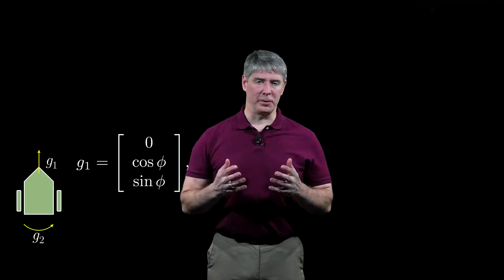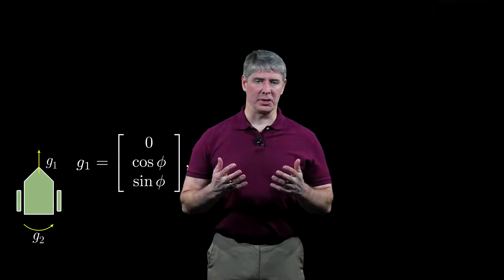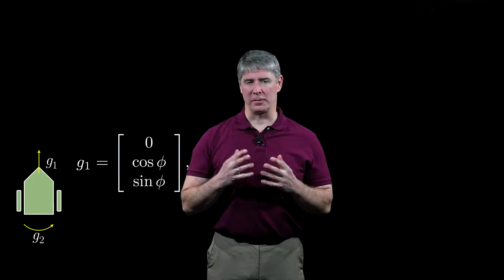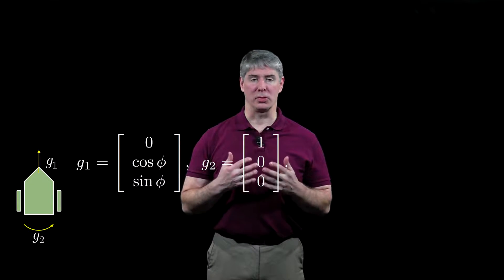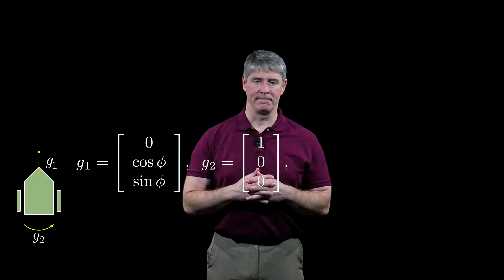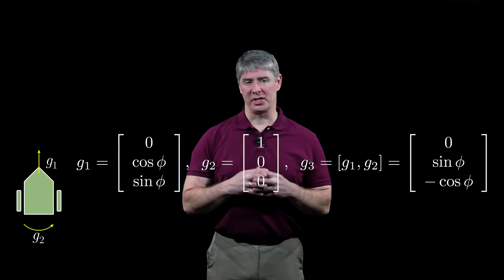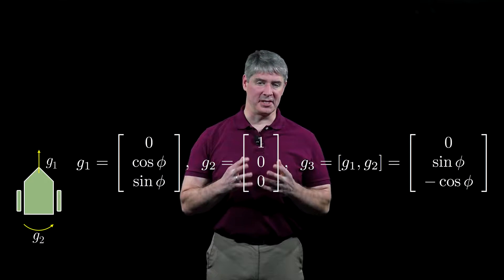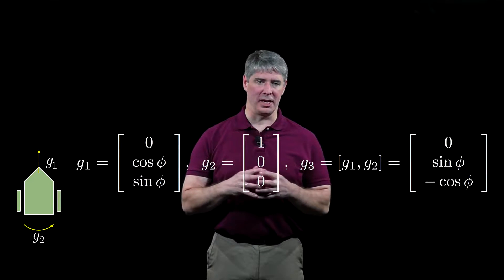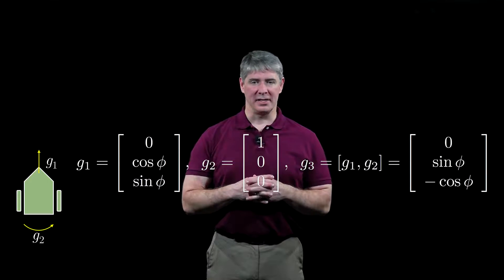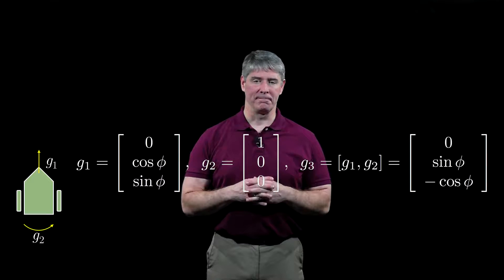Let's apply this test to our canonical non-holonomic mobile robot. The vector field G1 corresponds to forward motion, and the vector field G2 corresponds to rotating in place. The Lie bracket of G1 and G2, which I'll call G3, is (0, sine phi, minus cosine phi), a sideways parallel parking motion.